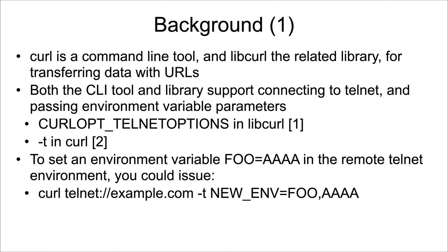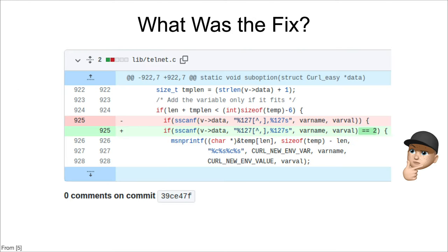Which brings us to CVE-2021-22925. So curl is a command line tool and libcurl is the related library. No, I'm just messing with you. What was the fix here? The fix was that they set it exactly equal to two. They wanted to make sure that this would match twice, and if it returned zero or some other thing besides two, then it would not get in here.